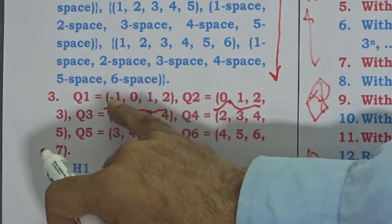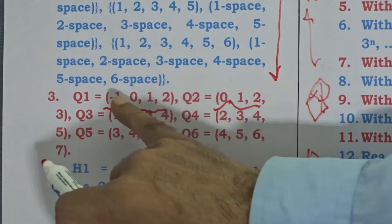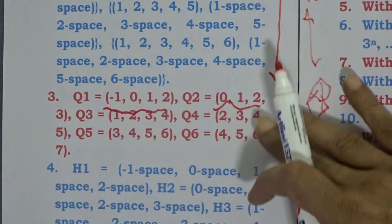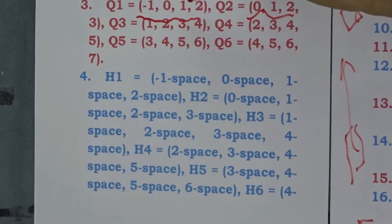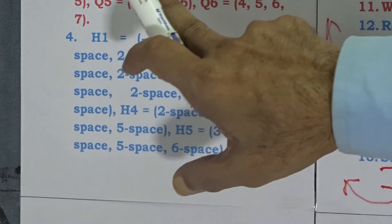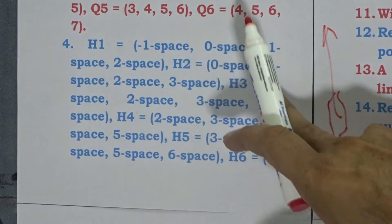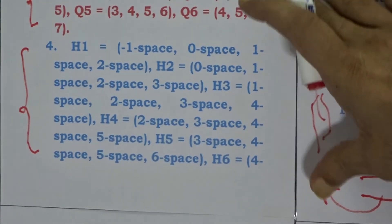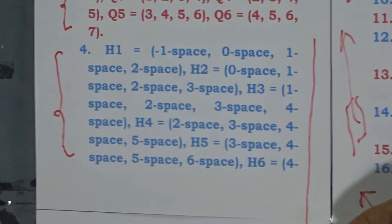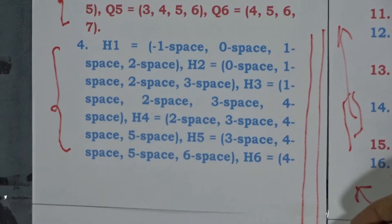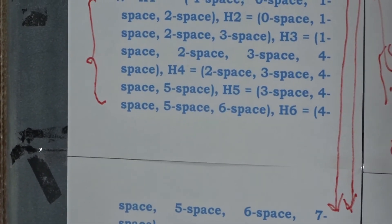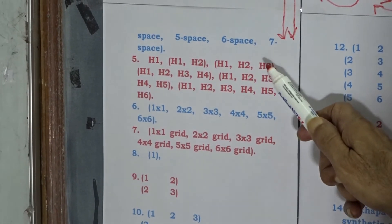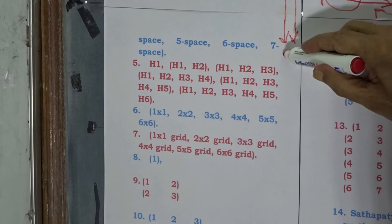From here we can again have a correspondence: {-1, 0, 1, 2} maps to {-1-space, 0-space, 1-space, 2-space}; {0, 1, 2, 3} maps to {0-space, 1-space, 2-space, 3-space}. Therefore from the set of Qs we can have a set of X. This feature leads to a very big attainment, a very blissful attainment, taking us for further enrichment. Then a step ahead we have a pairing: H1 as first element, {H1, H2} as second element, {H1, H2, H3} as third element, and so on — again a further blissful attainment.